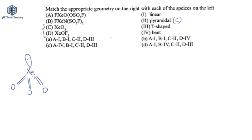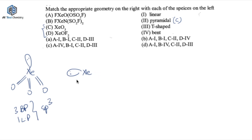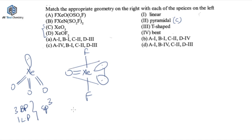For XeOF2, using VSEPR theory, you have three bond pairs and one lone pair, so hybridization is SP3 and shape is pyramidal. For XeOF2 the structure has a double-bonded O, two lone pairs on xenon, and two fluorines. You have three bond pairs and two lone pairs overall, so hybridization is SP3D, geometry is trigonal bipyramidal. These two were easy to approach, so D is matched with 3.